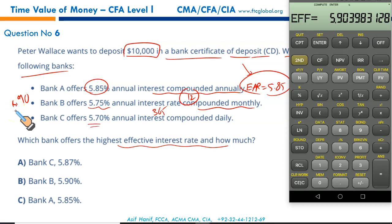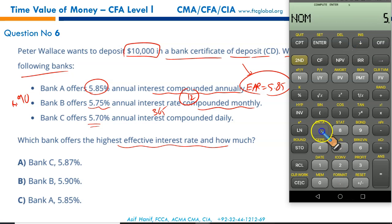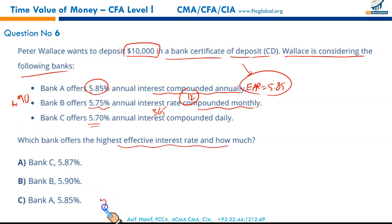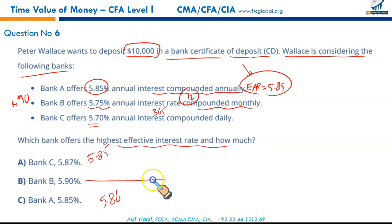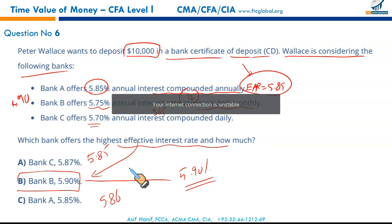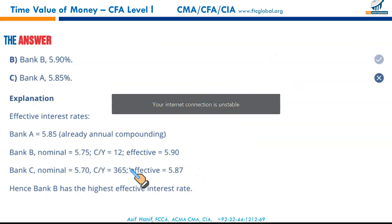For Bank C: nominal rate = 5.70, enter, up arrow, frequency = 365, enter, up arrow, press CPT — it's 5.86%. So: Bank C = 5.86%, Bank A = 5.85%, and the highest is Bank B at 5.90%. Even by 5 basis points, Bank B offers the highest effective rate — that makes B the correct option.